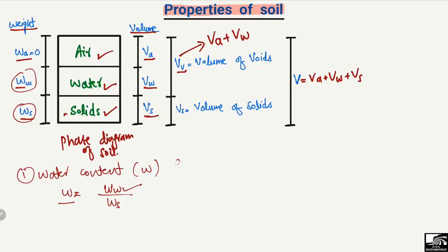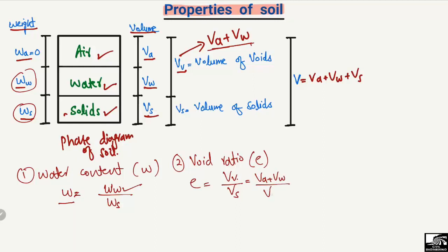The second property is the void ratio. The void ratio is equal to the volume of the voids divided by the volume of the solids. The volume of the voids is the combination of volume of air and volume of water — so we write it as Va plus Vw divided by Vs. This gives you the void ratio for the soil sample.